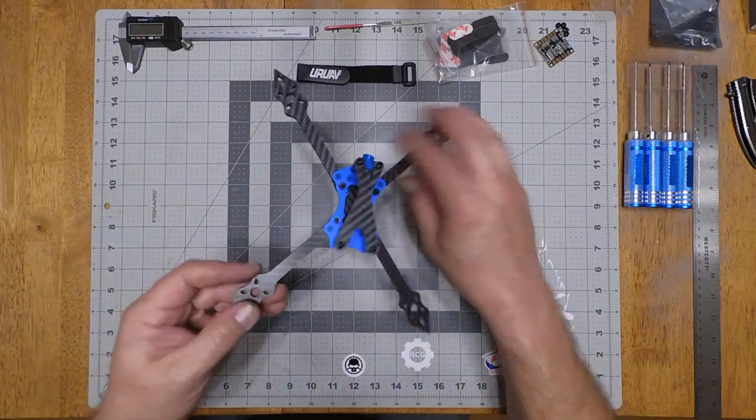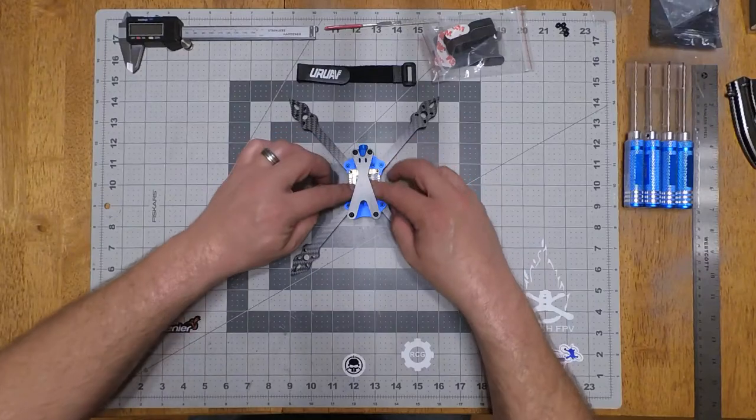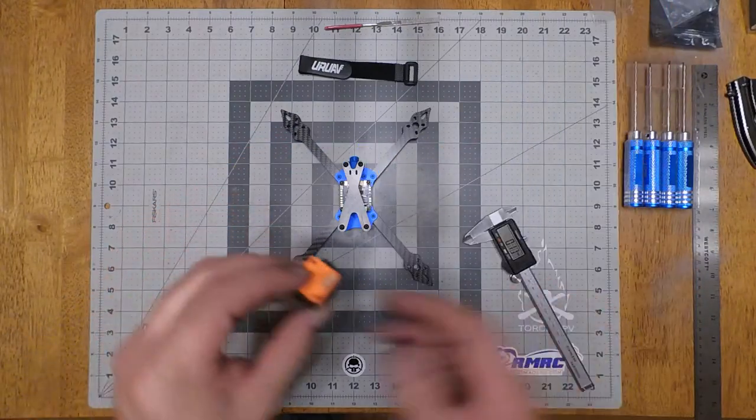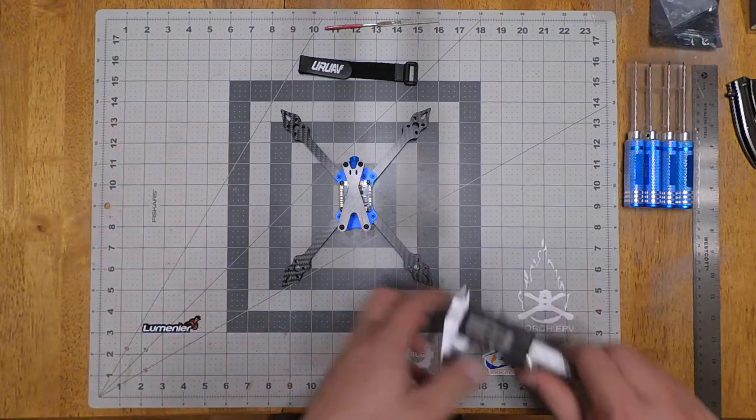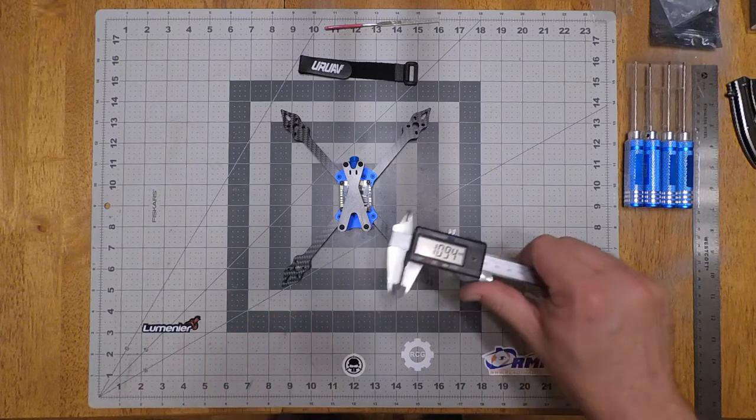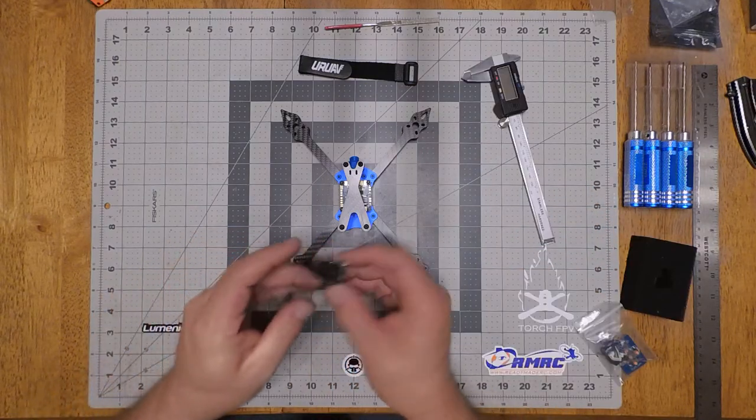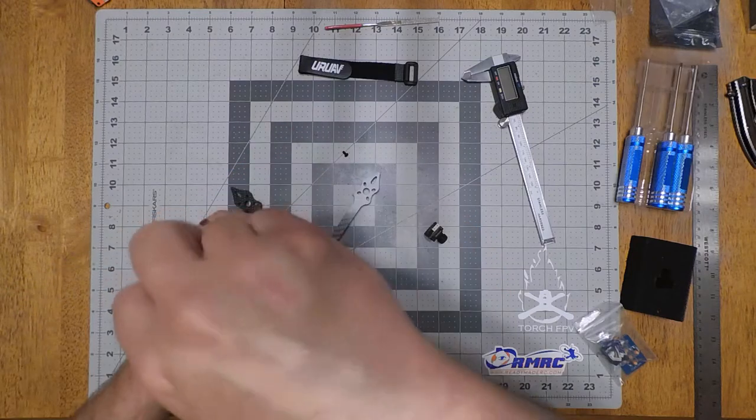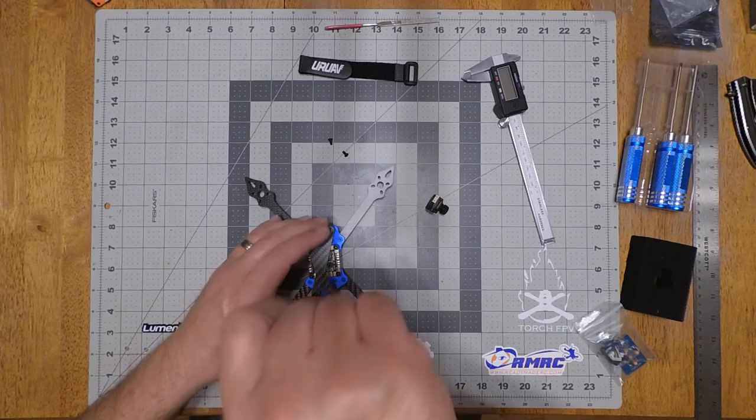So the Swift Mini will not fit. The Swift Mini is 22 millimeters. So I'm going to have to grab a Micro. Swift 2 Micro. This will be the first time using this camera in this build. We'll make a board. Let's put it in.